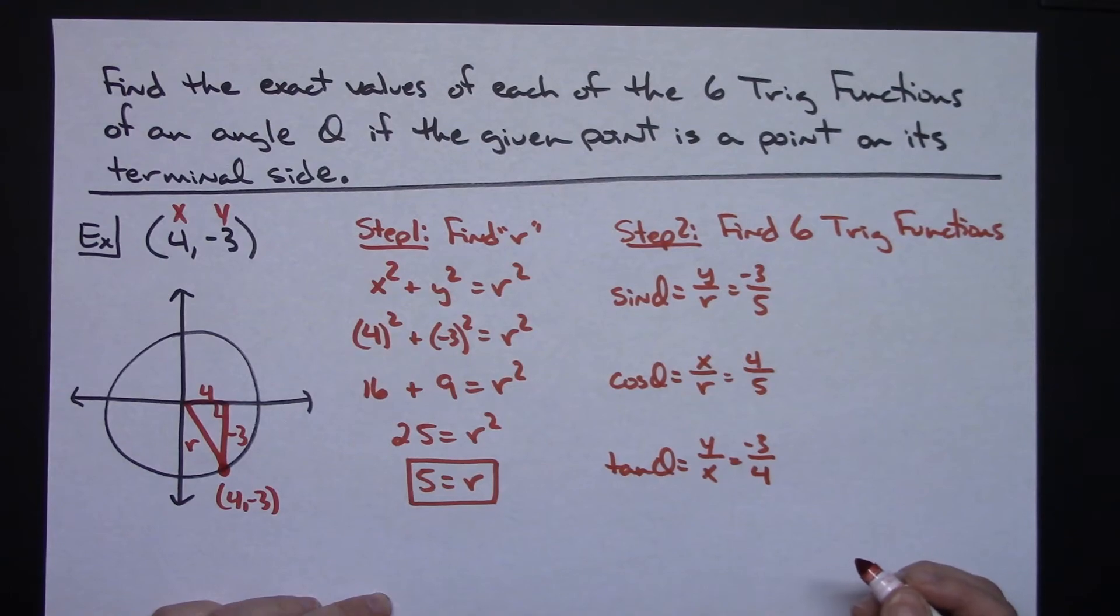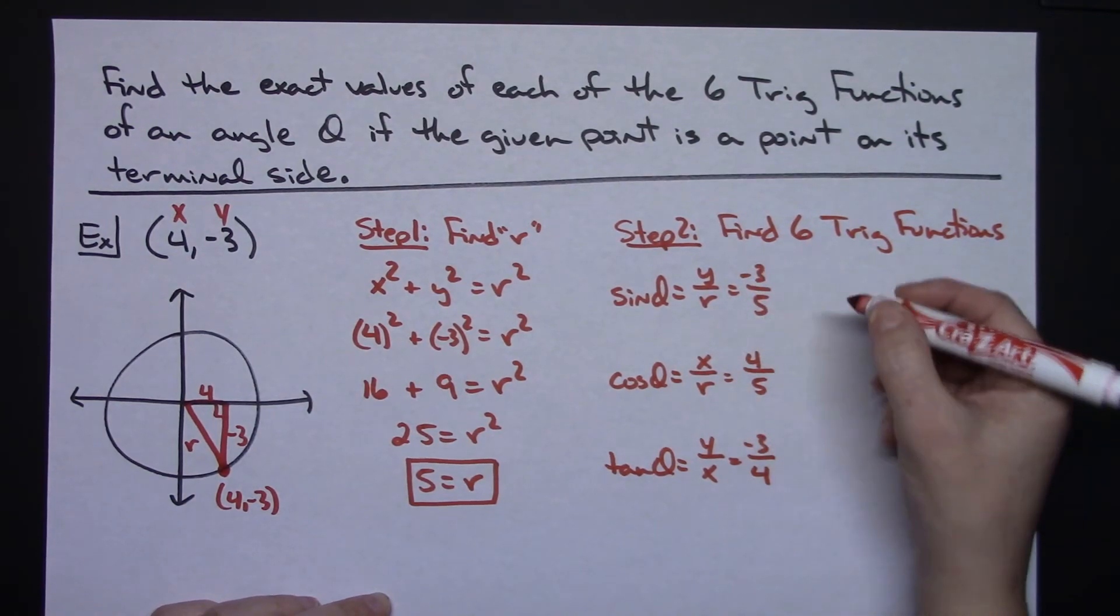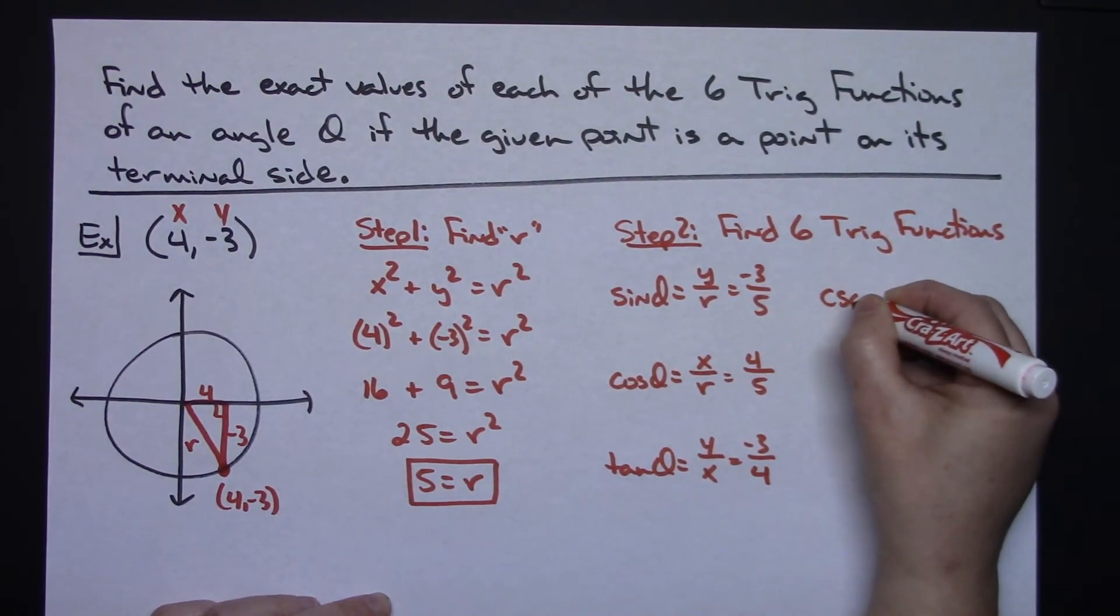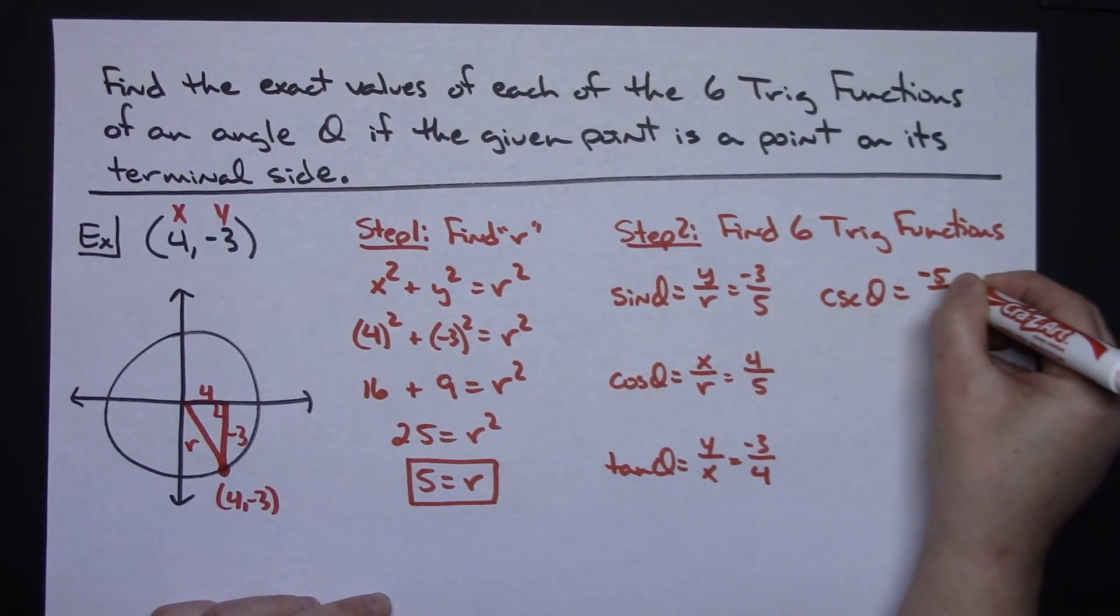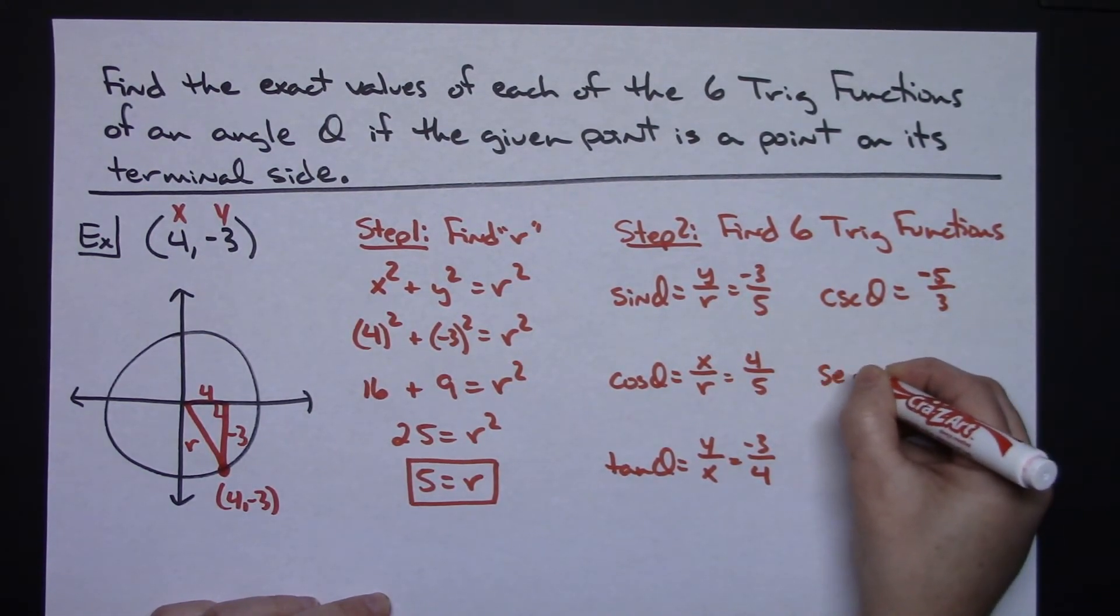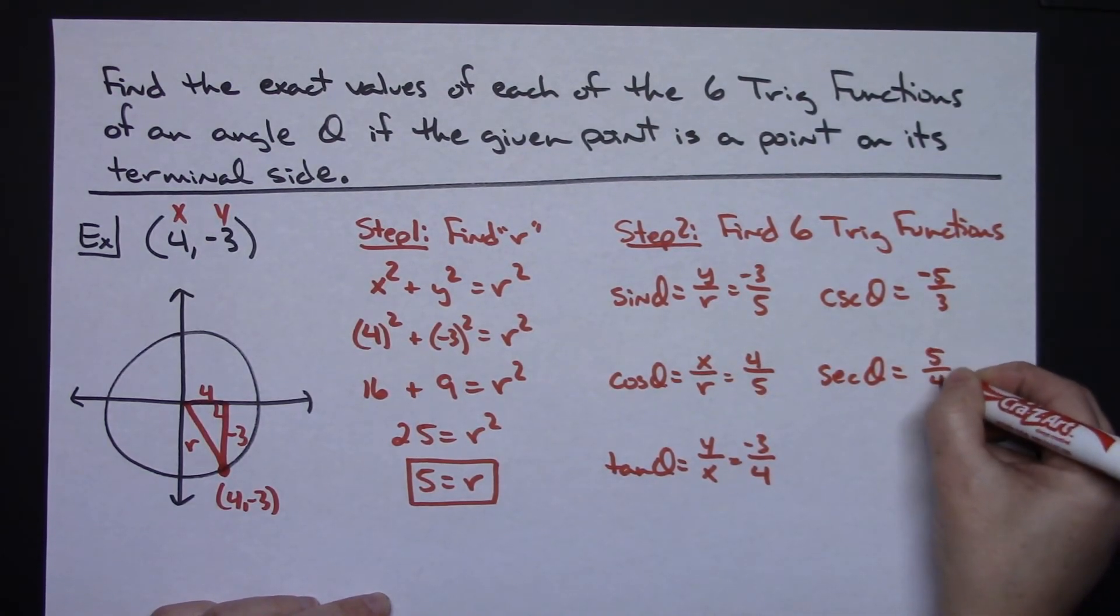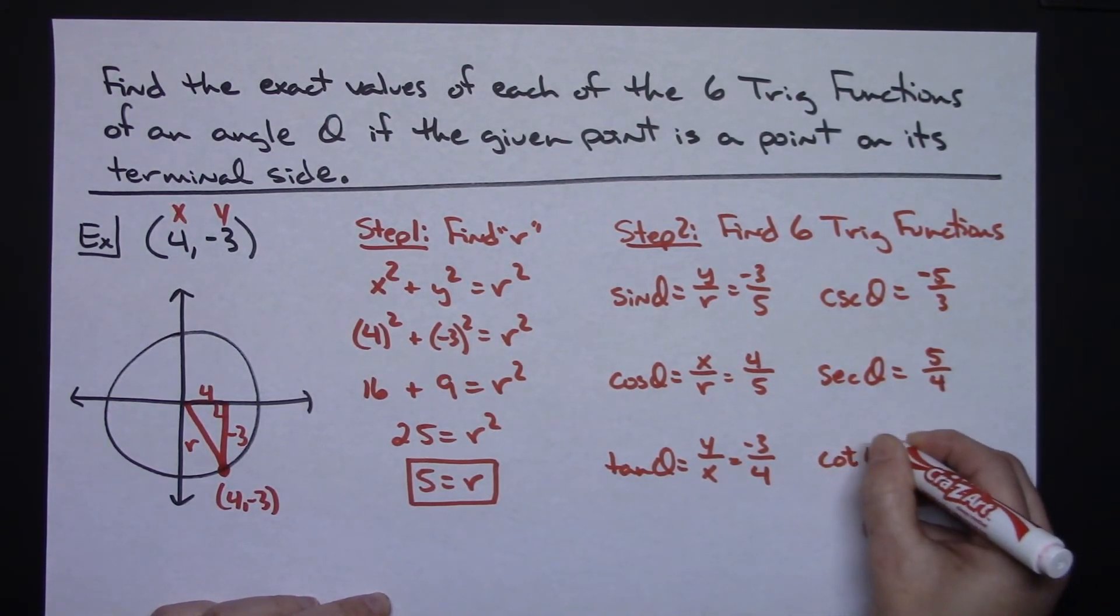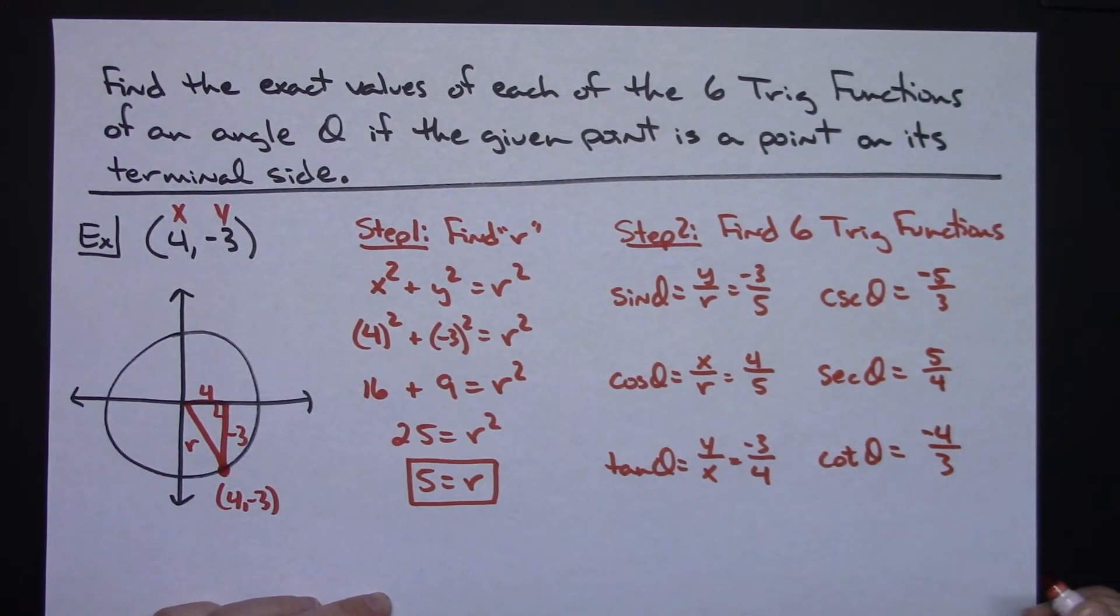Now usually if you're really confident that you've got those three correct, then you can write the other three just by taking the reciprocal of these. You can also verify with the definition, but you wouldn't have to if you know these three are right. So cosecant theta is going to be the reciprocal here. So negative 5 thirds. Secant of theta is going to be the reciprocal here, which is 5 fourths. And cotangent of theta will be the reciprocal of this one, which is negative 4 thirds.